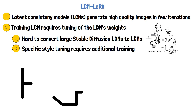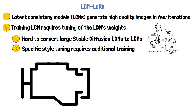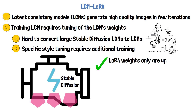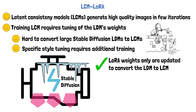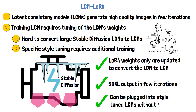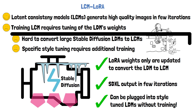LCM LoRA helps to democratize this process. Instead of converting the entire stable diffusion weights, we use LoRA — meaning a small number of weights are added to the model layers, and only the added adapter weights change while all pre-trained weights are kept frozen. With this method the researchers were able to convert SDXL and get high quality output in just a few iterations. Another cool attribute of LCM LoRA is that it is possible to plug the LoRA weights into other style-tuned versions of the model, so it acts as an acceleration module for stable diffusion models.